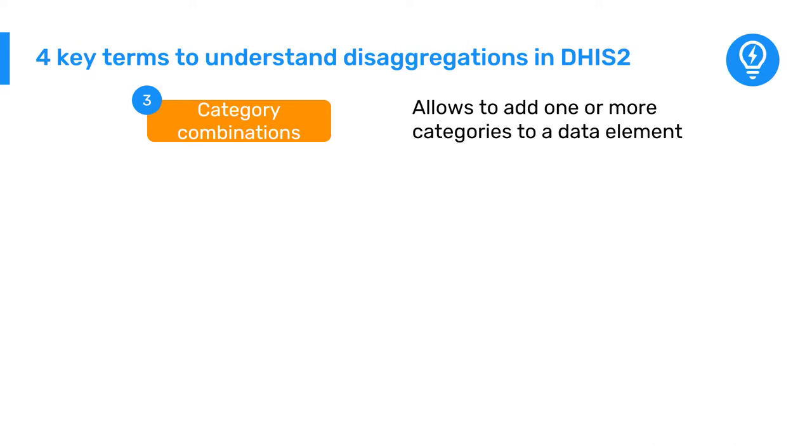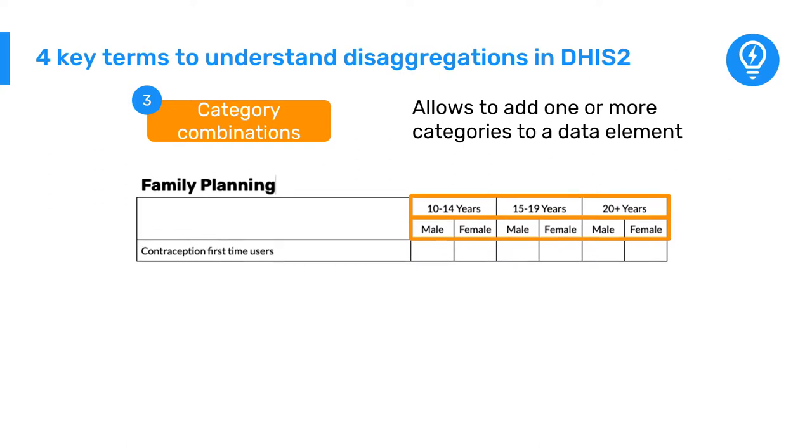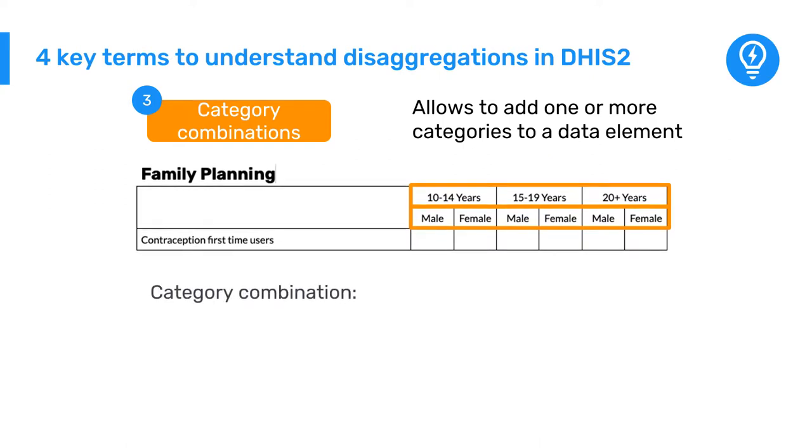In the family planning section of the RMN-CAH dataset, the data element is disaggregated by both age and sex. The category combination would therefore consist of these two categories: RMN-CAH age and sex.